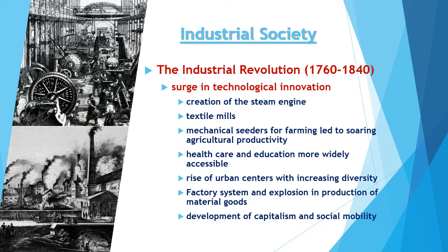We started to see a big surplus of goods and a rise in the standard of living for a lot of people, though there were still many issues like pollution and child labor. Within industrial society, we see the burgeoning of the capitalist economy and, along with it, the social mobility that brings. Unlike in feudalism, where you're stuck in your position your whole life as a peasant, industrial society with capitalism became an opportunity for people to improve their economic situation.